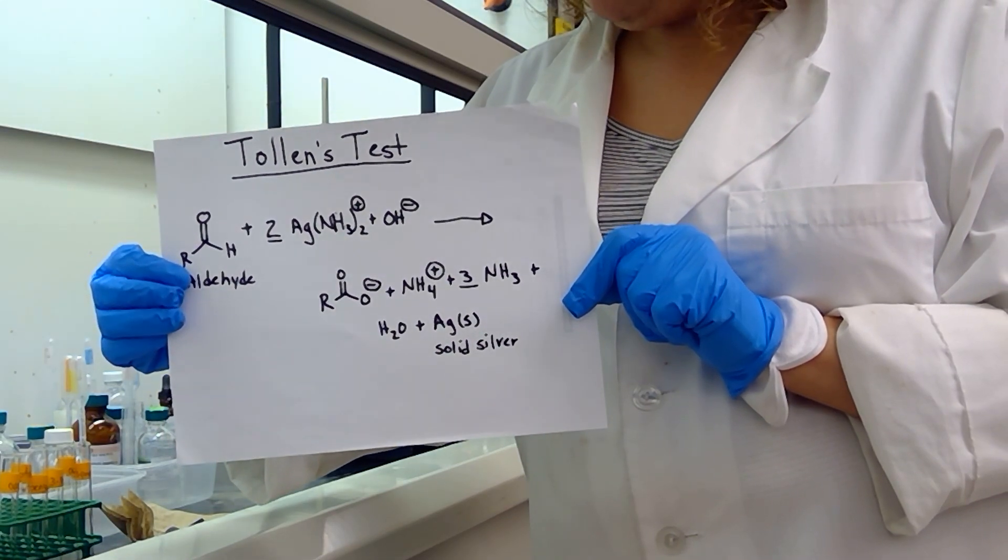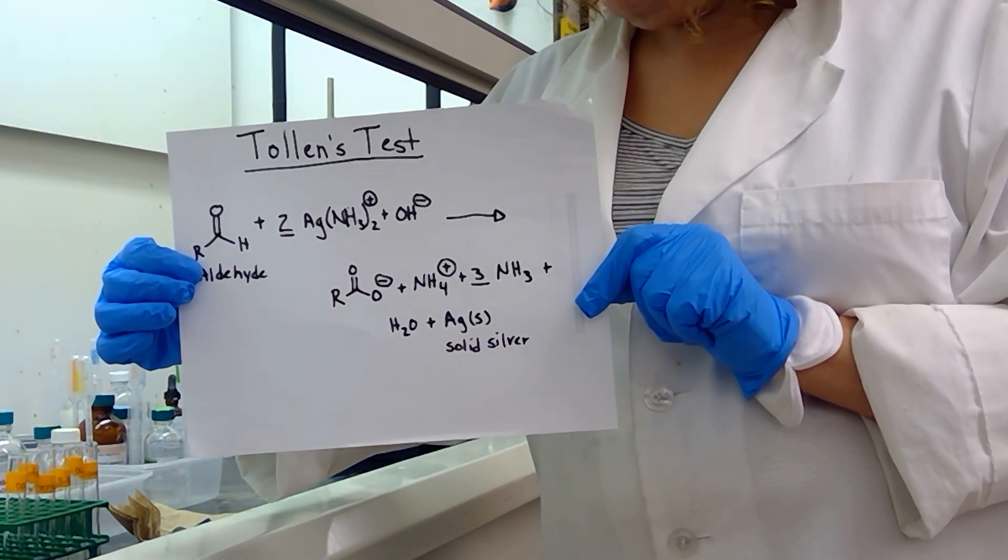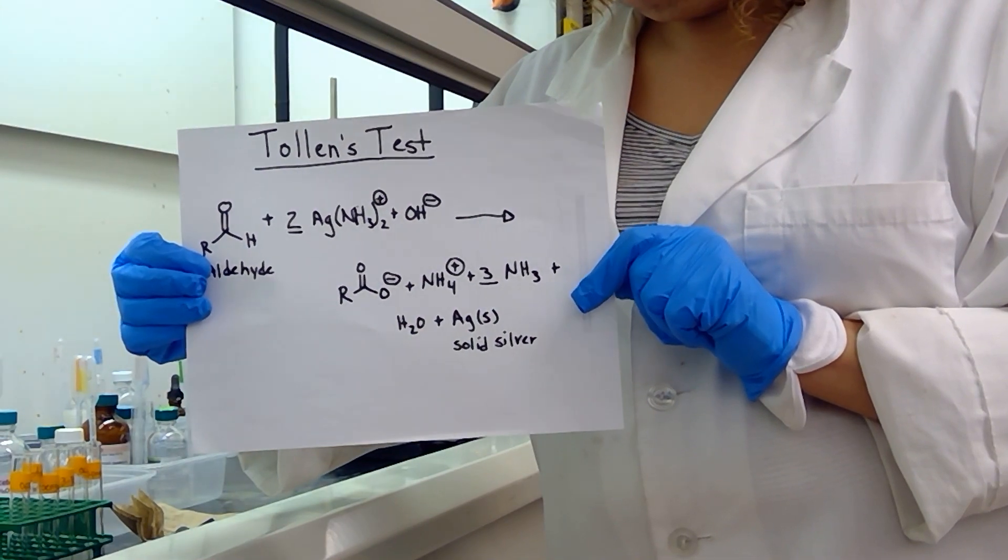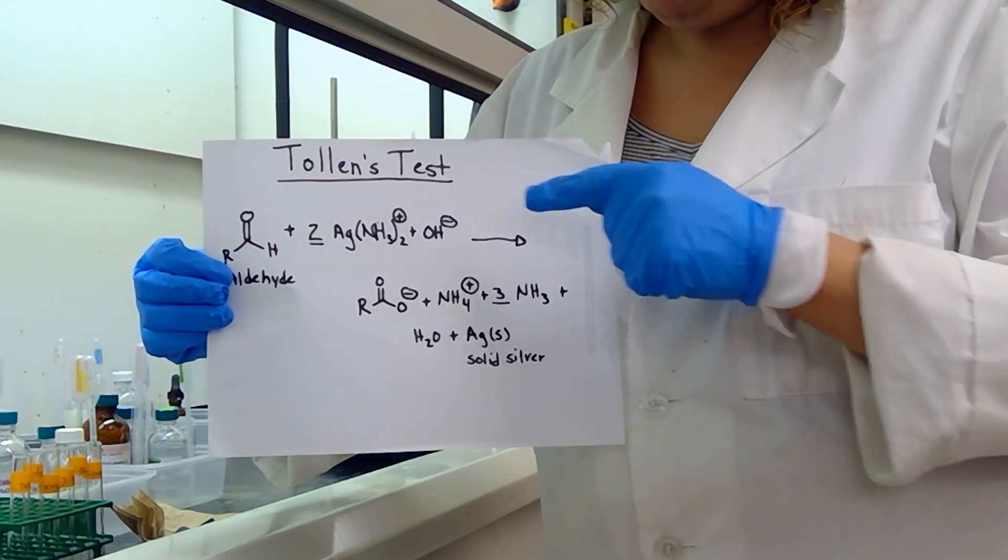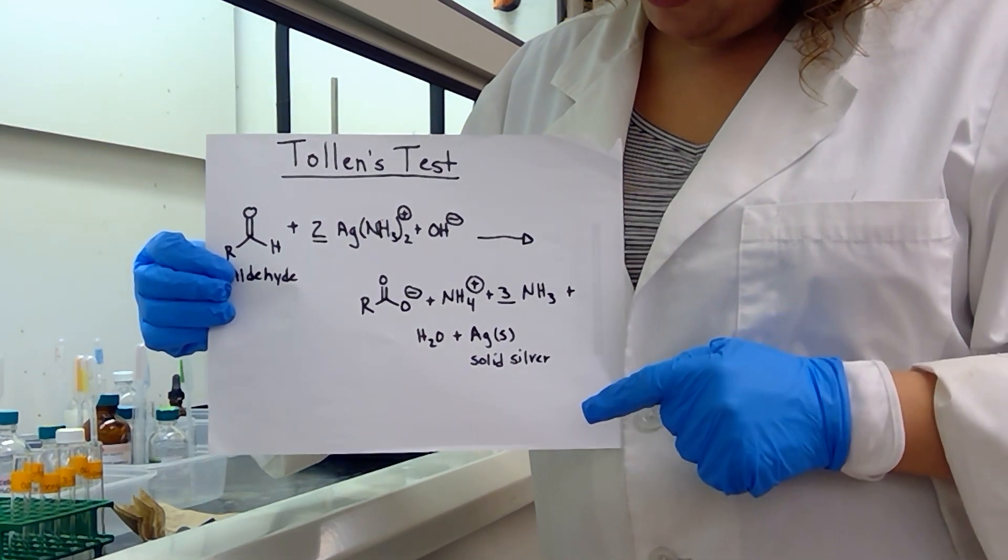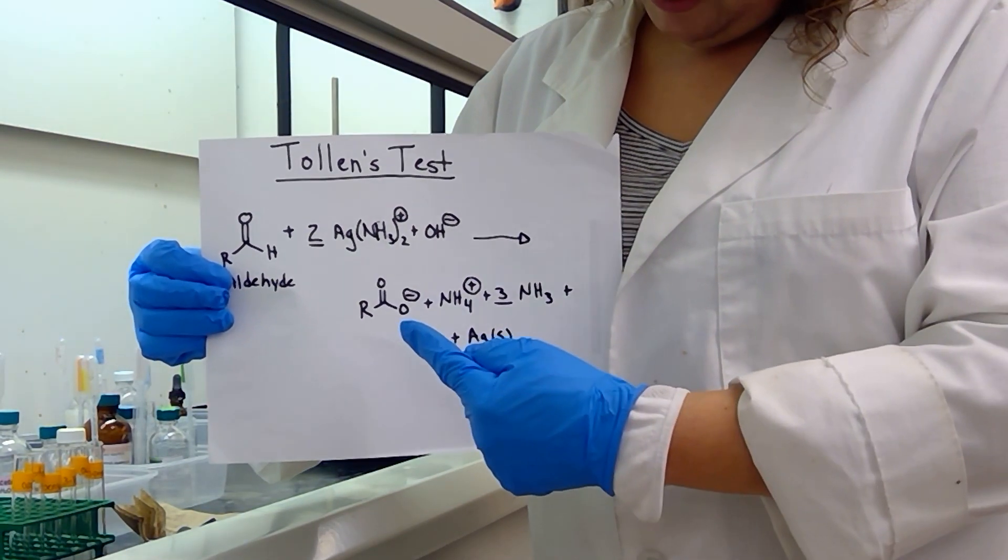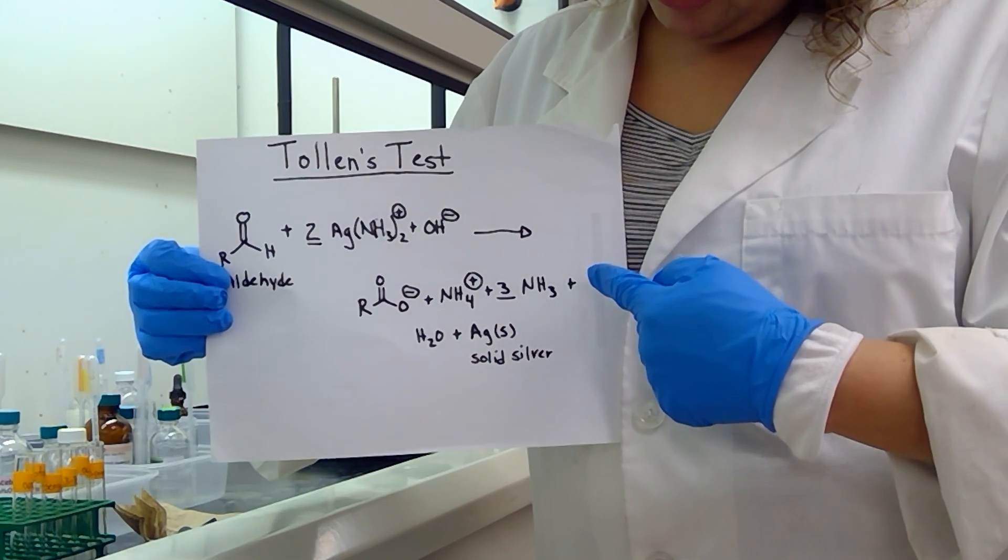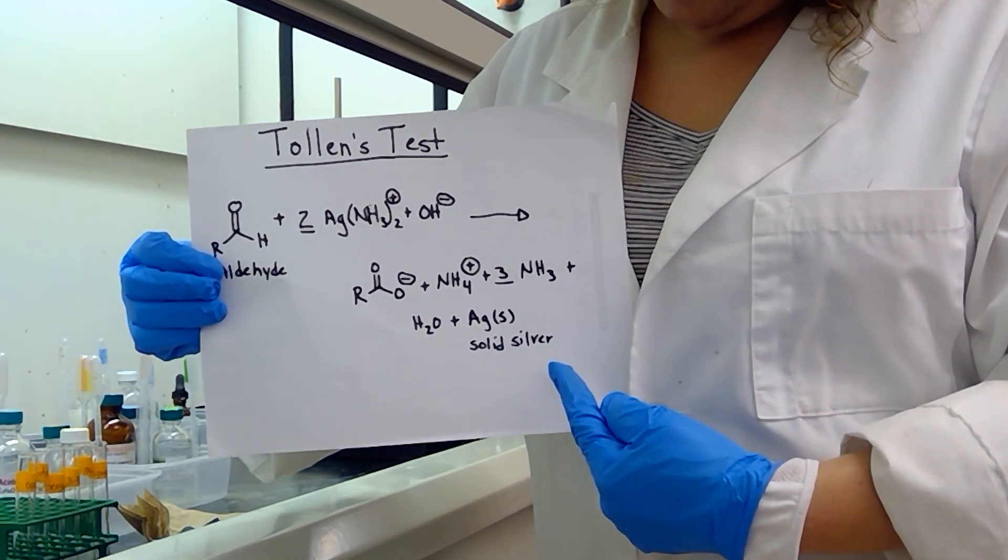An aldehyde will be mixed with silver nitrate and ammonium hydroxide to form a silver ammonium complex ion. We will add some hydroxide, and if the experiment is successful, we will create a carboxylate, ammonium, ammonia, water, and finally solid silver.